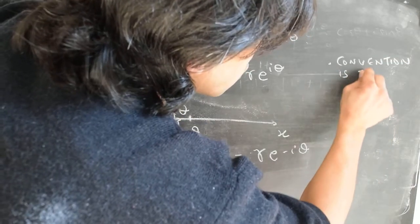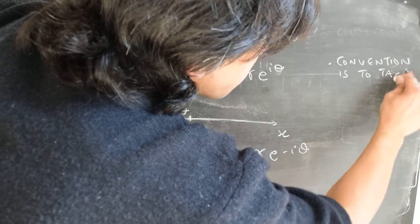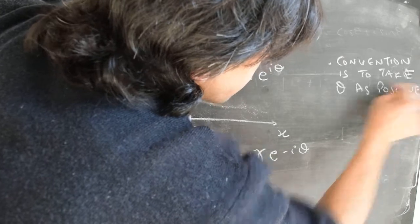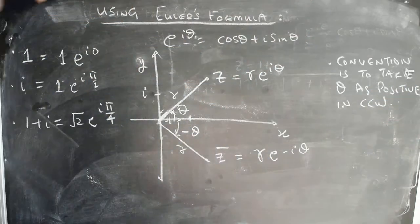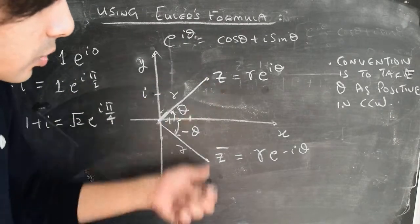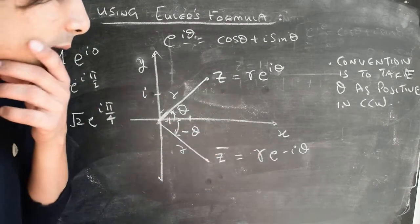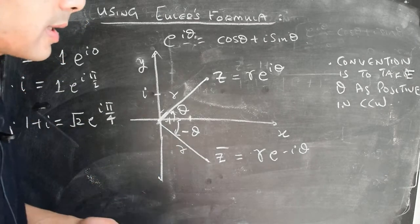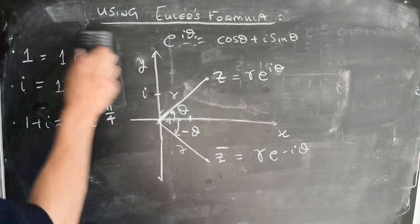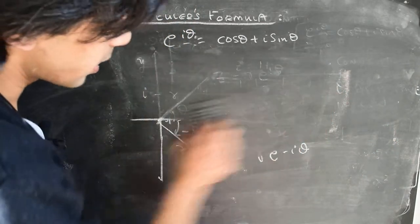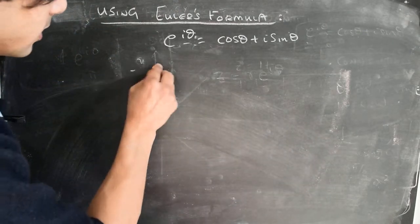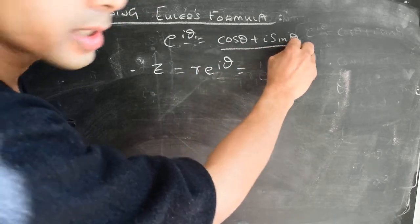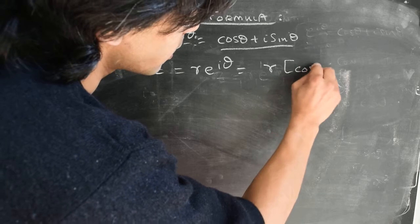The convention is to take theta as positive in the counterclockwise direction. These two expressions — z and z-bar — can be combined to write expressions in terms of cosine theta and sine theta. Given z = r·e to the power i·theta, we can use Euler's identity to write this as r times (cosine theta plus i·sine theta).